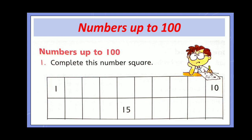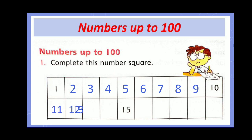Numbers up to 100: complete this number square. Some numbers are given and some are missing. Let's complete it now. What comes after 1? 2, 3, 4, 5, 6, 7, 8, 9, and 10 is already given. What comes after 10? 11, 12, 13, 14 — 15 is already here. Then 16, 17, 18, 19, 20. This is how the number square has been completed.